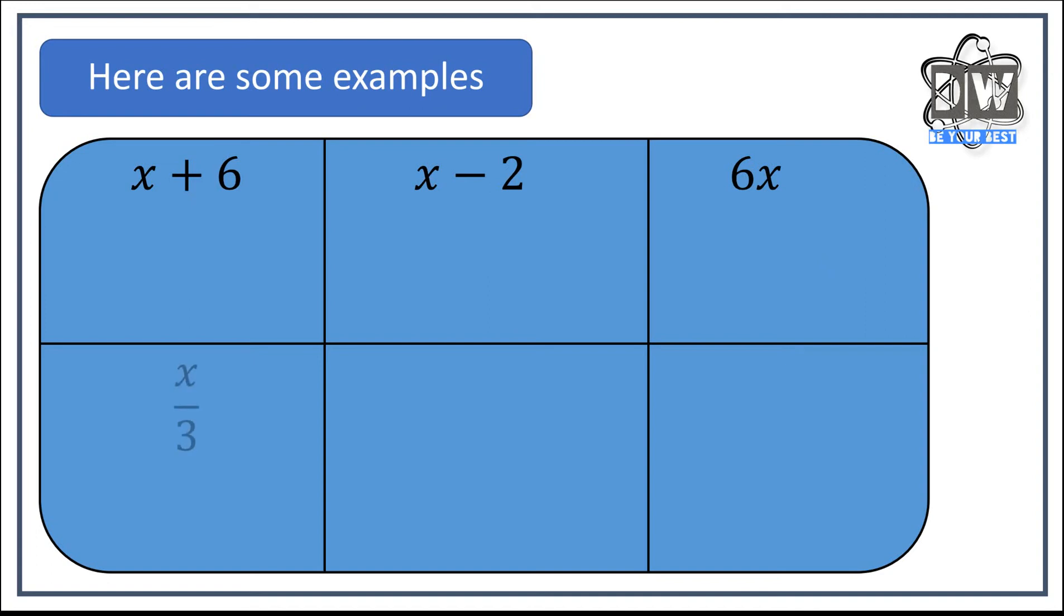Next up we have a number we don't know divided by three, a number that we don't know squared, a number that we don't know cubed. Now that means that's x times x. This one means x times x times x.